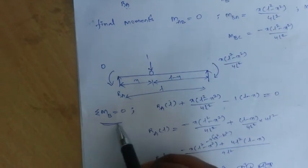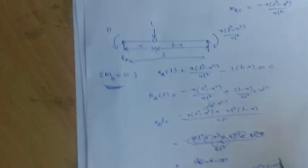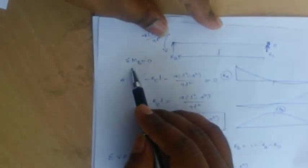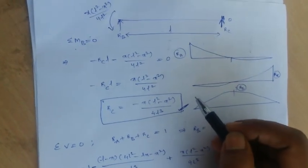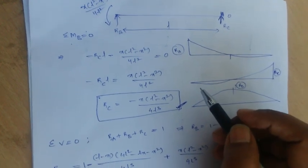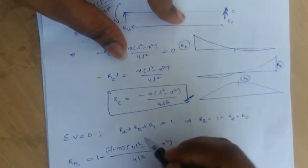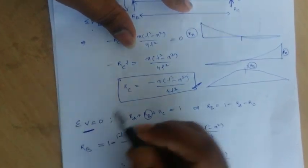To determine R_A, apply sigma M_B = 0 for span AB. Similarly, applying sigma M_B = 0 for span BC gives R_C. Having found R_A and R_C, we find R_B using the equilibrium equation sigma V = 0.